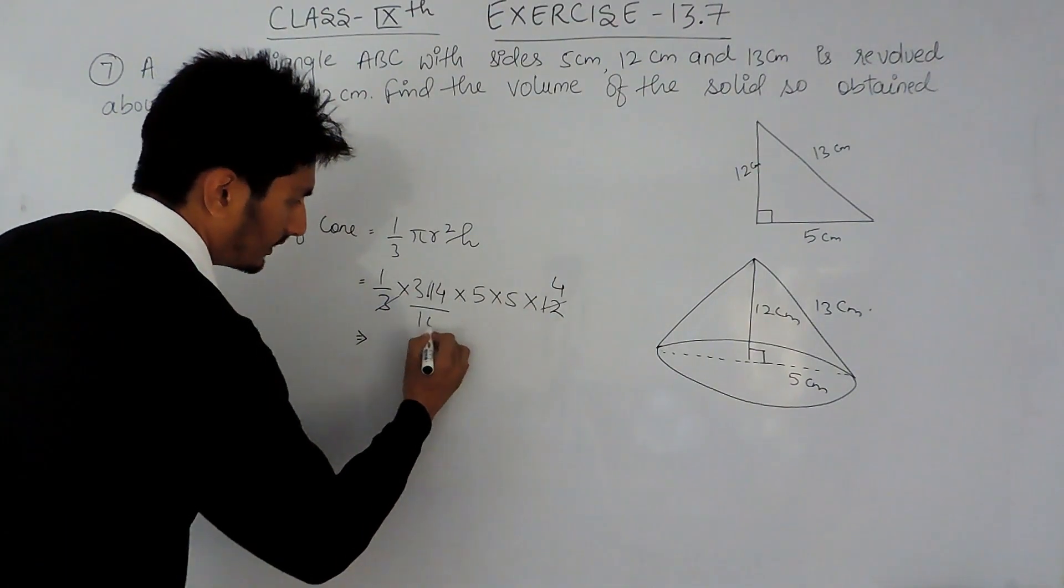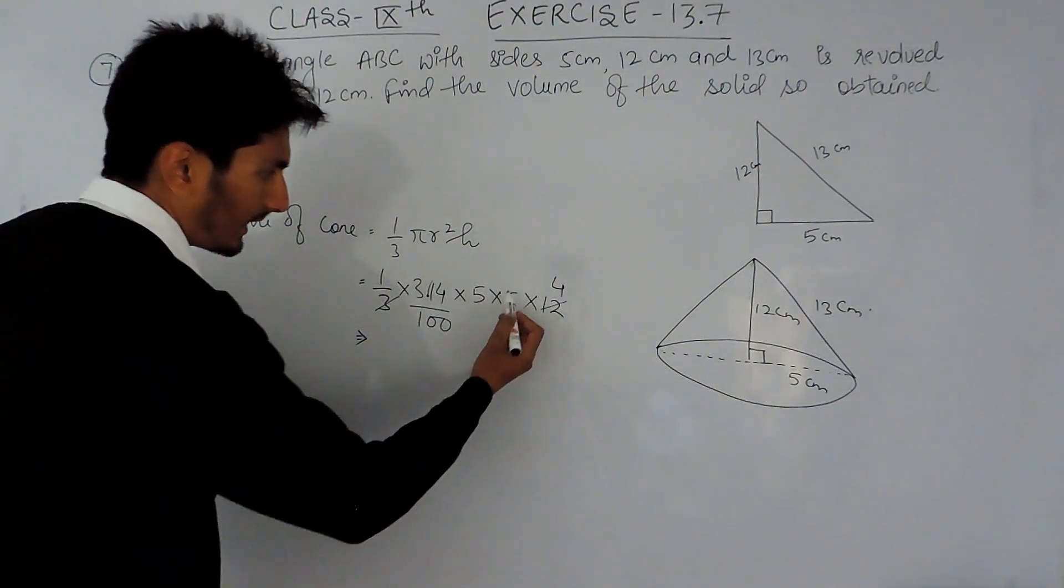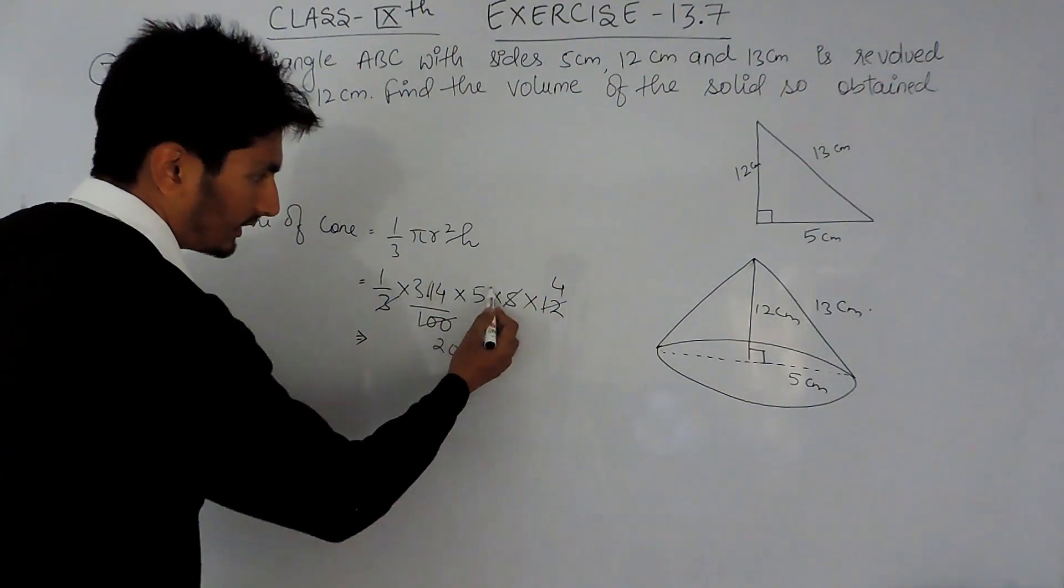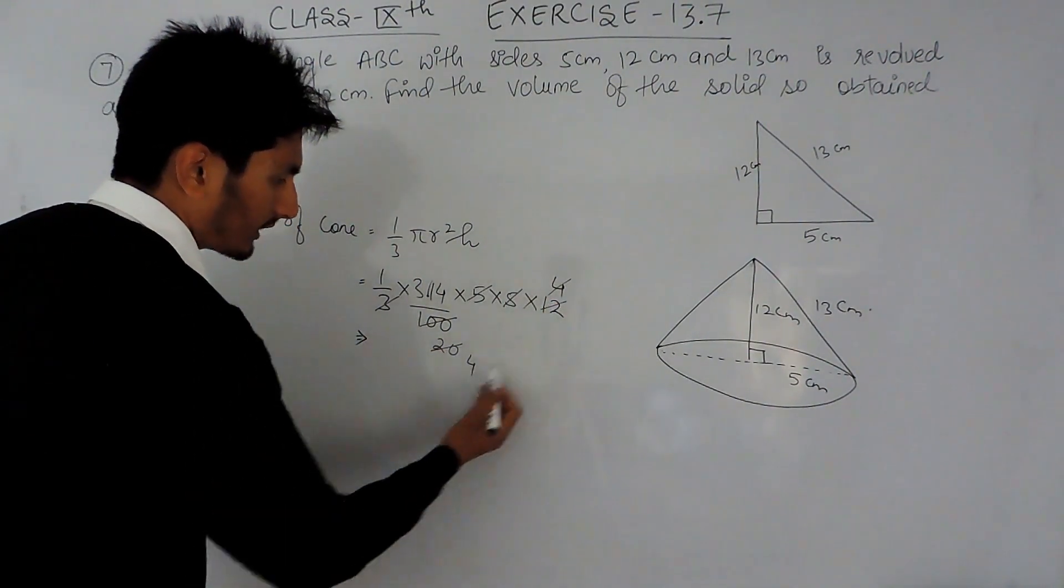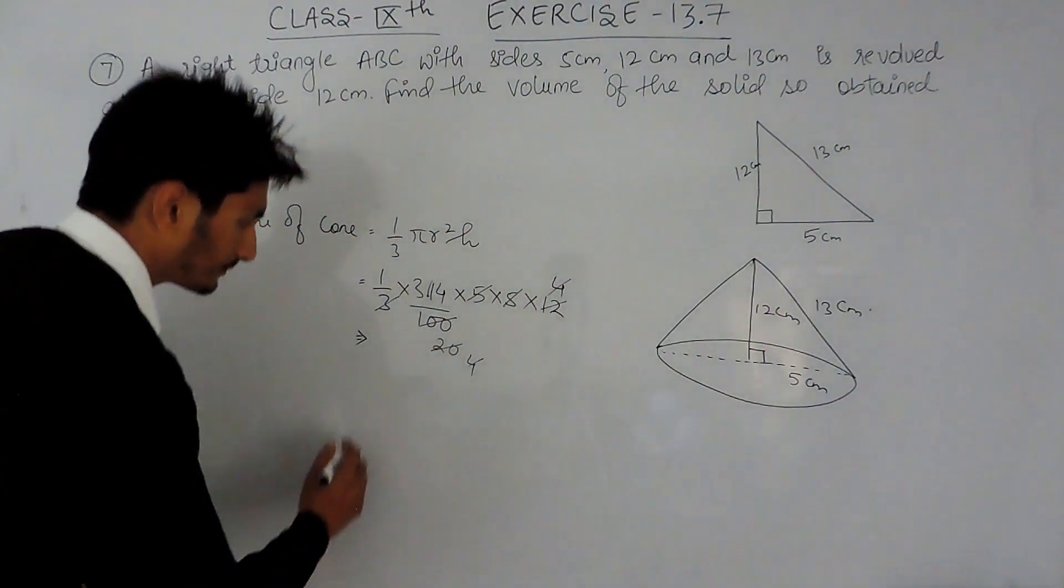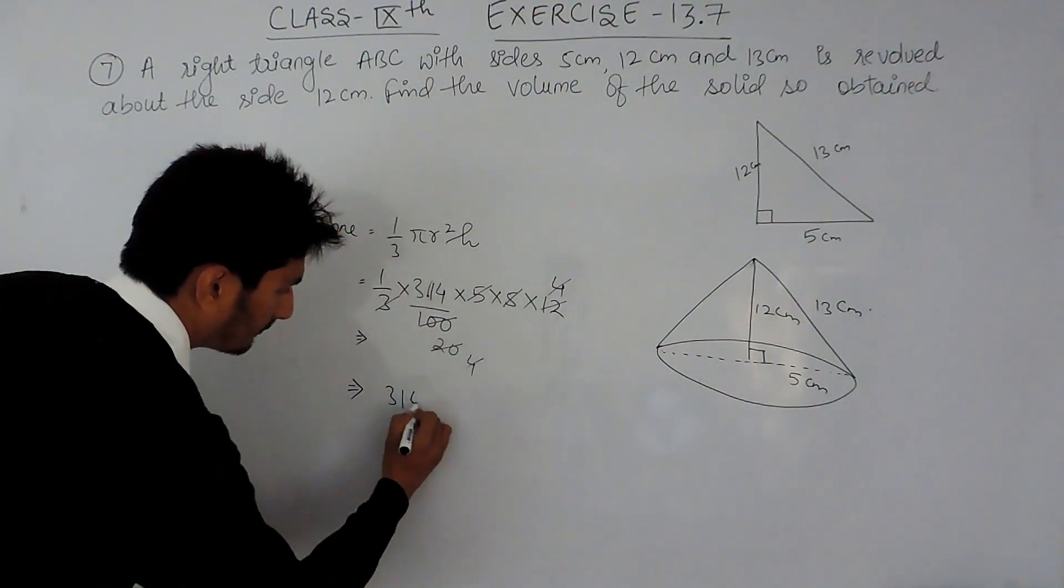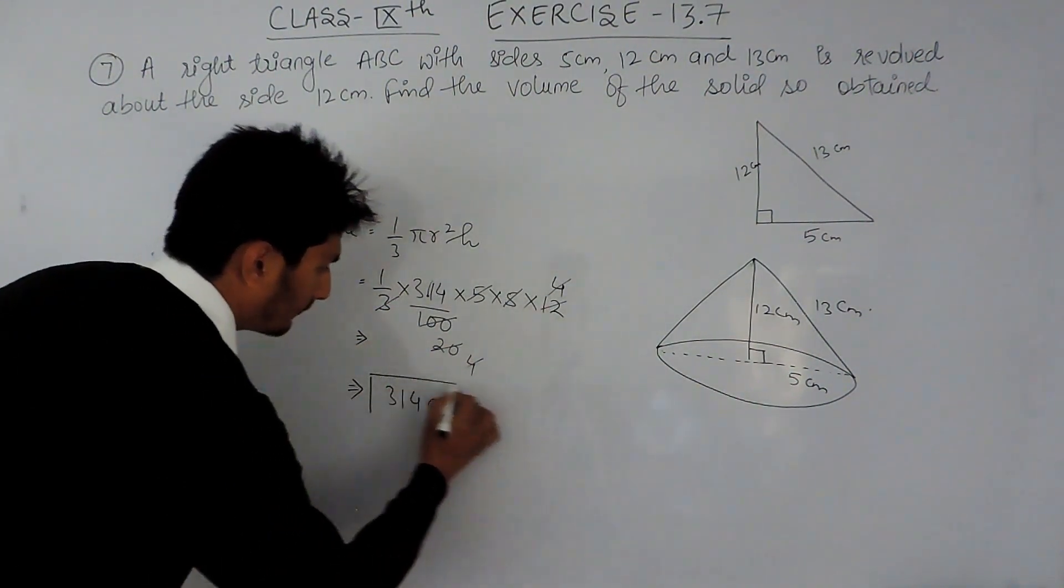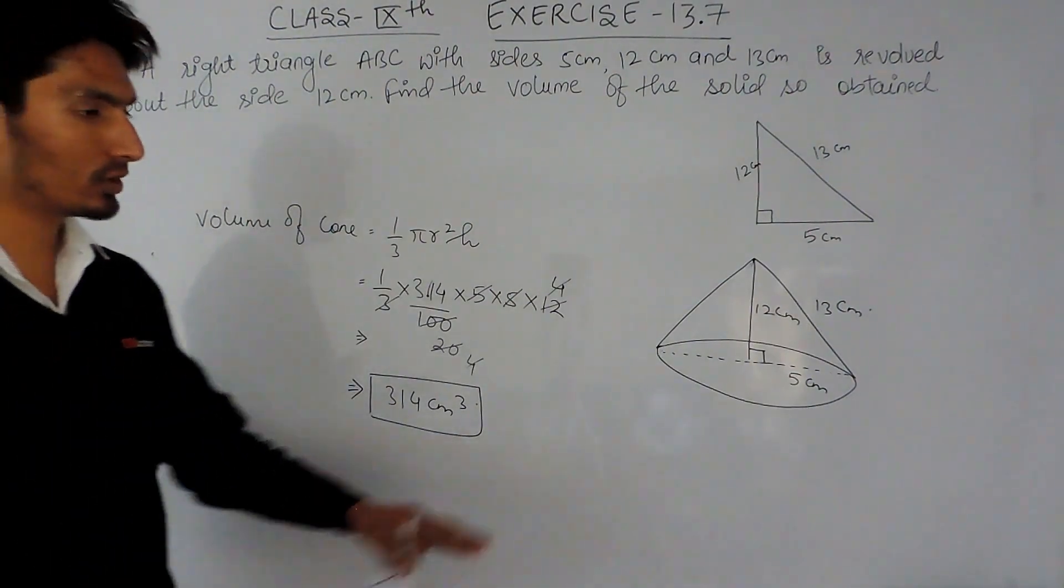So removing the decimal, I can place two zeros in the denominator and 5 can be cancelled 20 times. Again 5 can be cancelled 4 times, and this 4 can be cancelled with this 4. So here the remaining value, that is 314 cm³, should be the volume for this particular question.